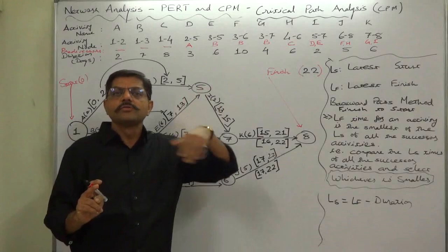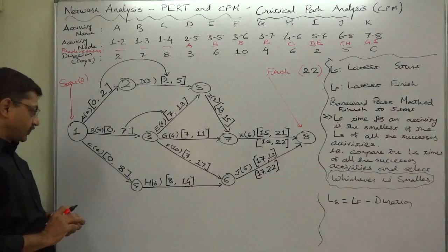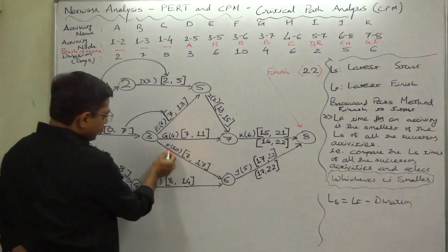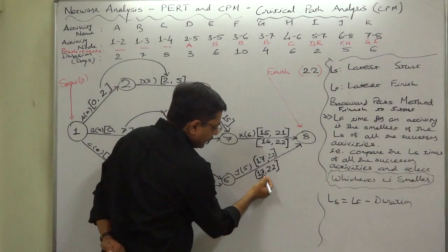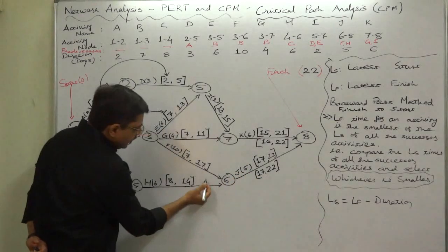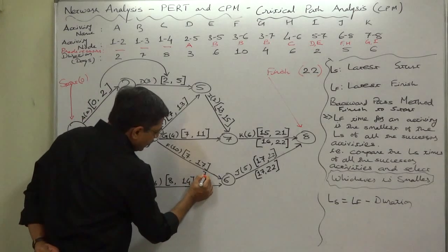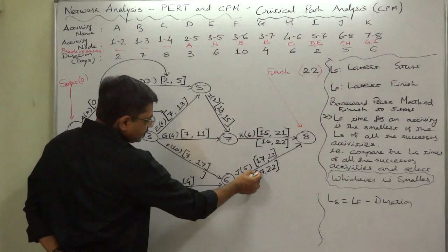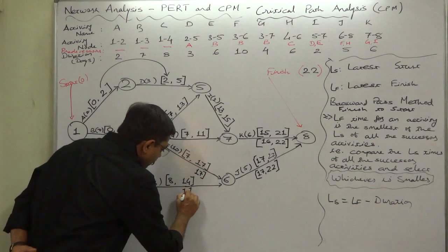The meaning of this flexibility we are going to discuss in the next few lectures - slacks and floats. Now, J is the successor of two activities F and H. J's latest start time will become the latest finish time of its predecessors. So for both H and F, this 17th day - the latest start of J - becomes the latest finish time of F as well as H.